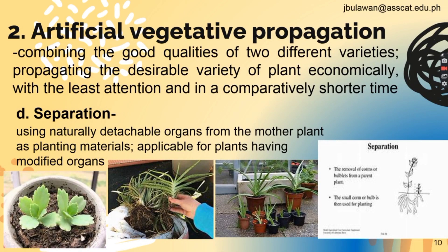For separation, it involves using naturally detachable organs from the mother plant as planting materials, which is applicable for plants having modified organs. You need to separate the other plants which can be naturally detached from the mother plant and transfer them into another pot.